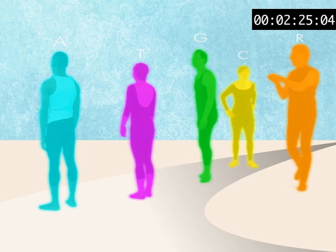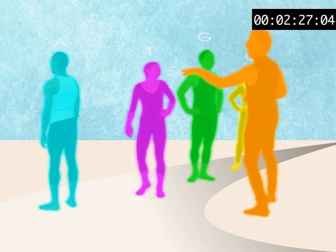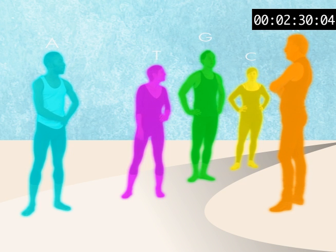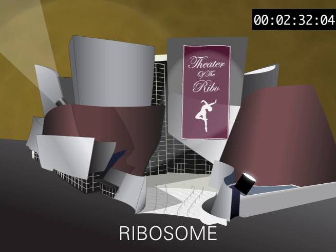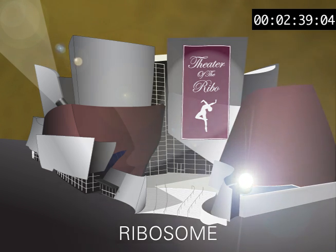Mr. polymerase explains to the dancers that there is a production tonight at the theater of the ribo. The ribosome, a place far away from the nucleus where protein production in the cell ultimately takes place.